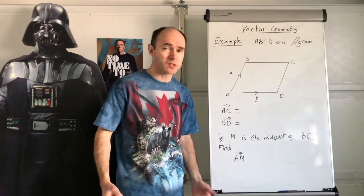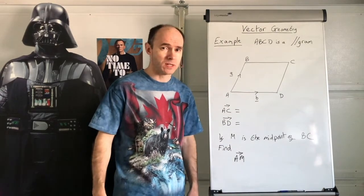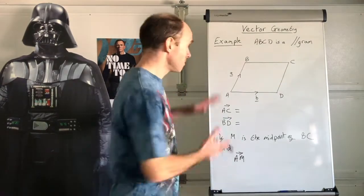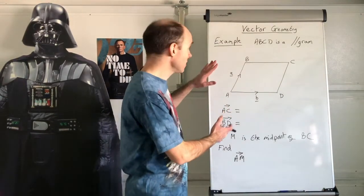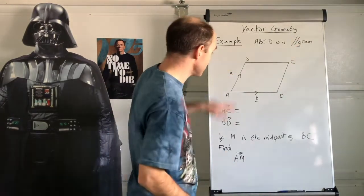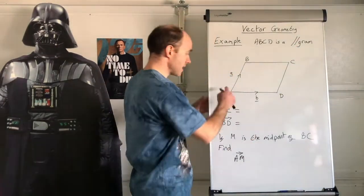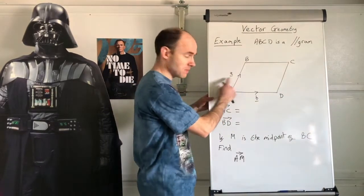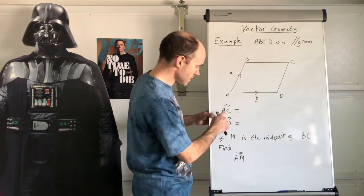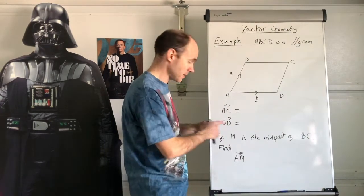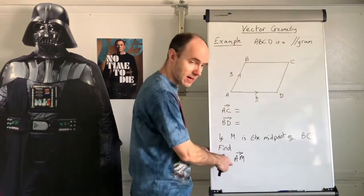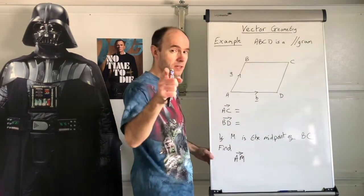Now here's a simple example. ABCD is a parallelogram. AB equals vector a and AD equals vector b. Find AC and BD. Then, if M is the midpoint of BC, find AM. Pause the video and try it.